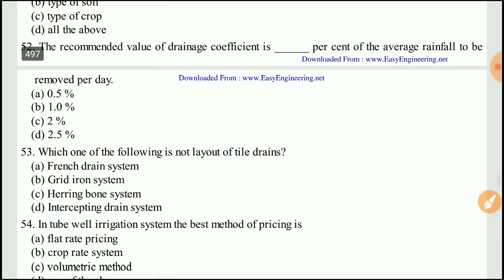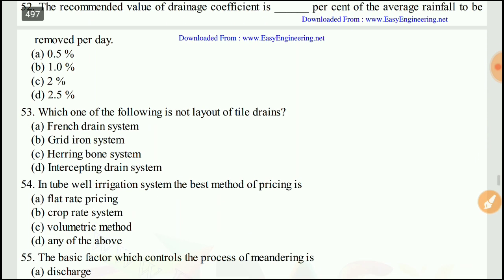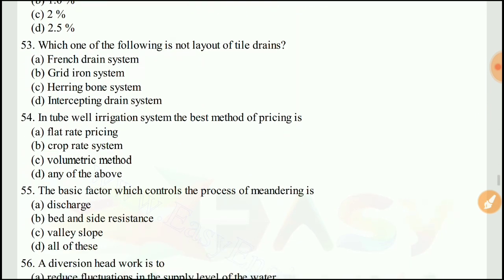Question 52: The recommended value of the drainage coefficient is what percentage of the average rainfall to be removed per day? The right answer would be B, one percent.